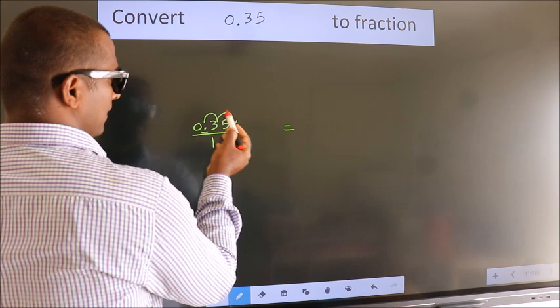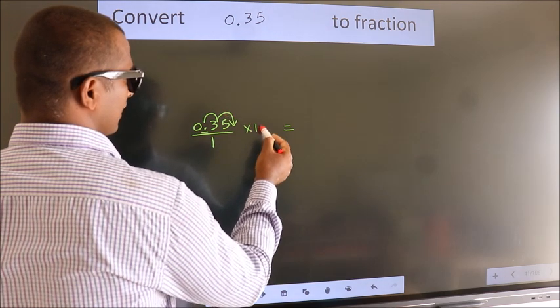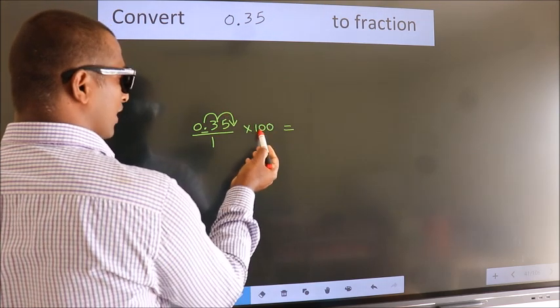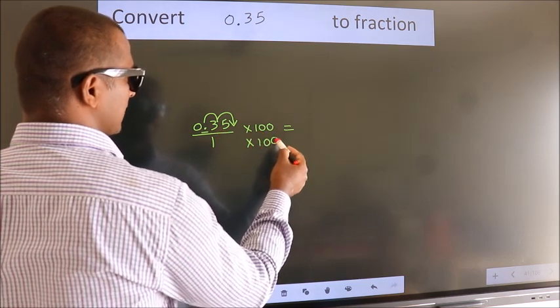To move this decimal after 2 numbers, we should multiply it with 100. Whatever you are multiplying in the numerator, in the denominator also we should multiply by the same.